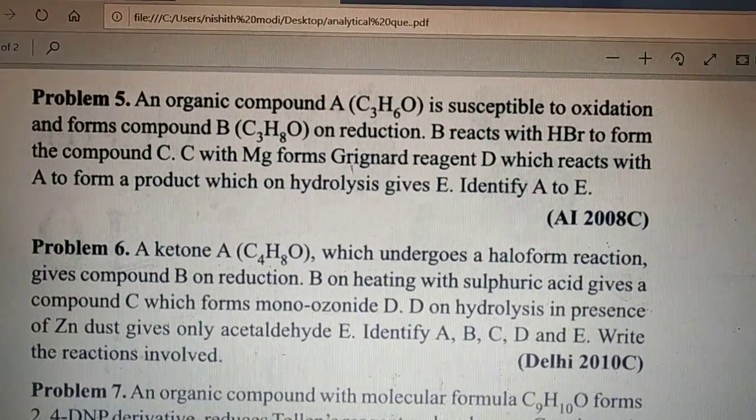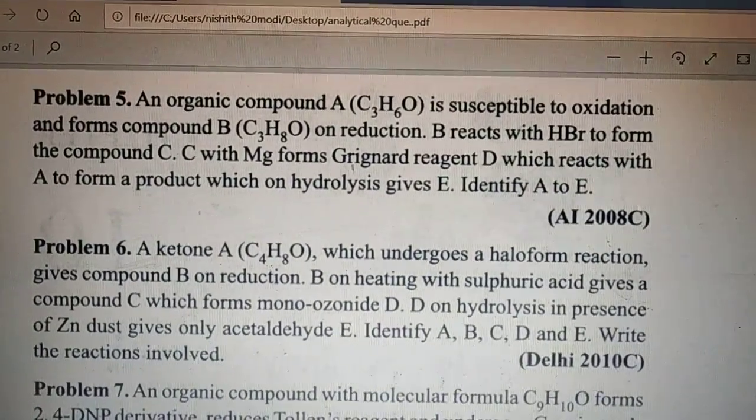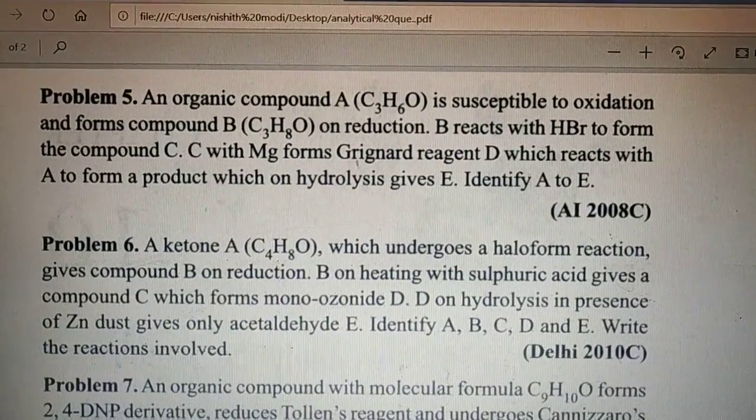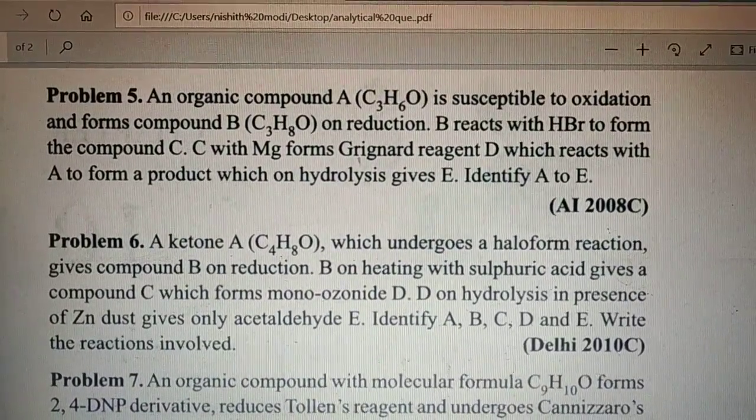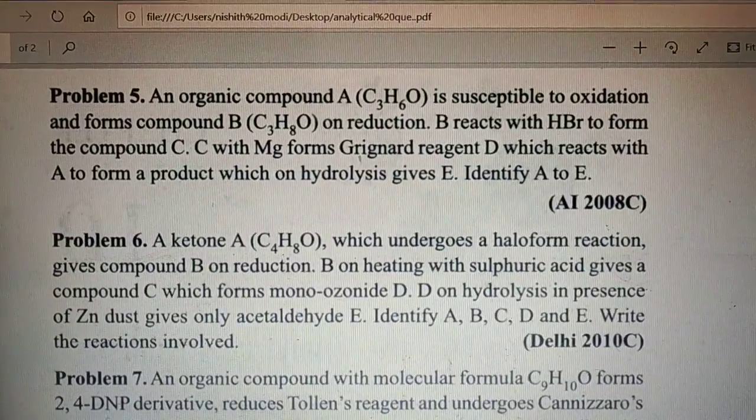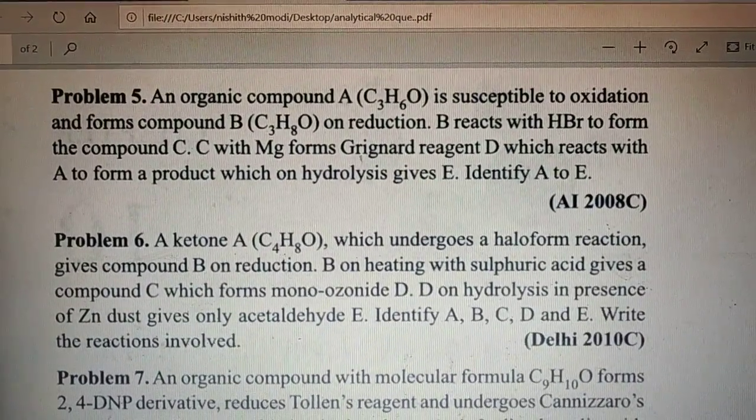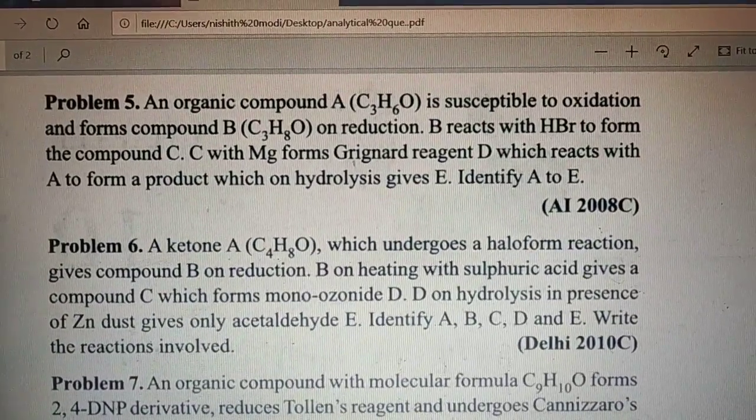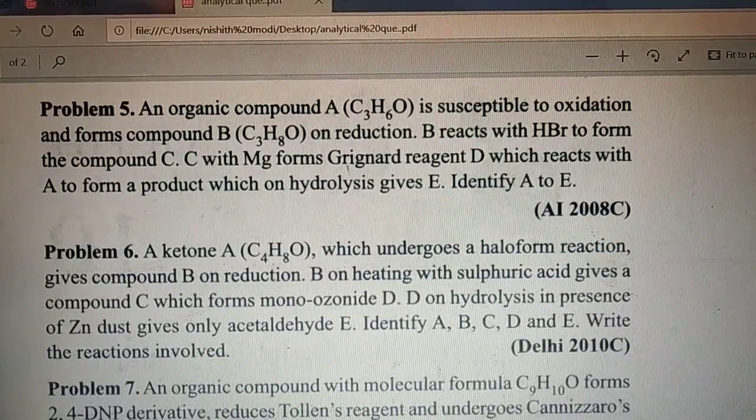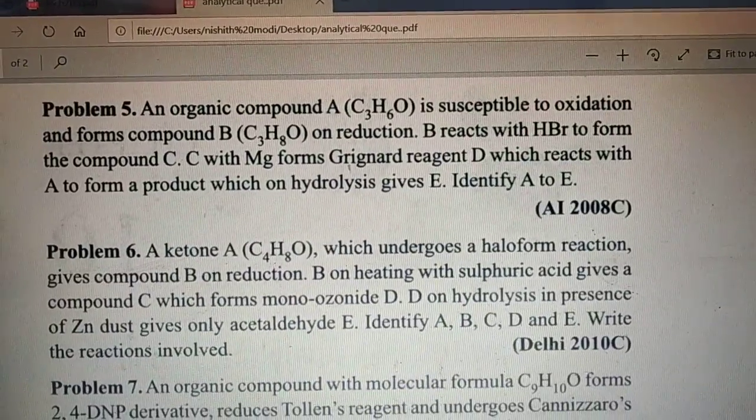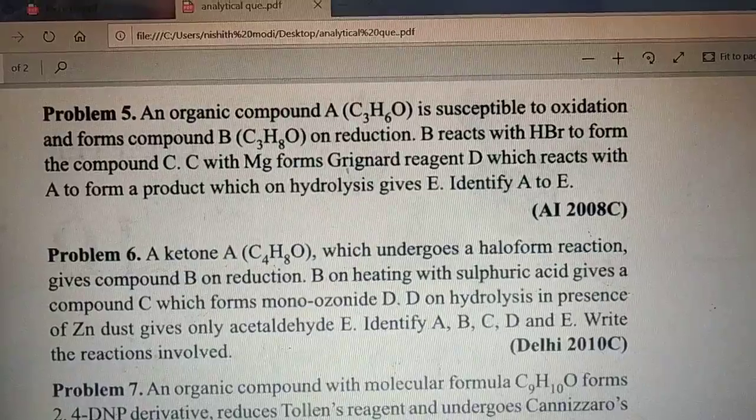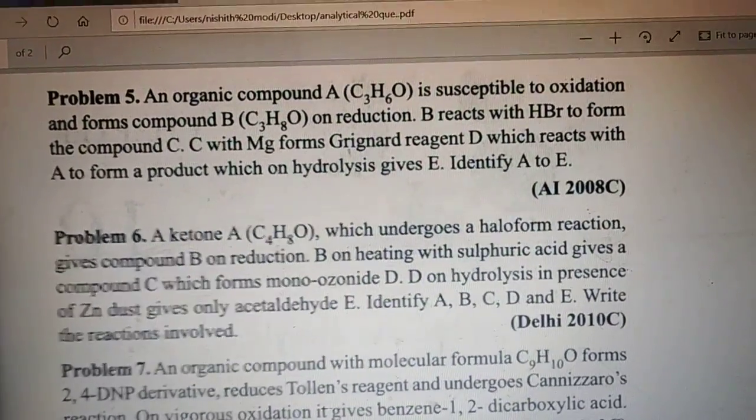Next numerical statement number 5. An organic compound A that is C3H6O is susceptible to oxidation and forms B that is C3H8O. A is oxidizing and after oxidation you get C3H8O that is B on reduction. B reacts with HBr to form compound C. C with Mg means Grignard reaction will give you the Grignard reagent with MgBr that is D, which reacts with A to form a product which on hydrolysis gives E. Read this statement twice and then we start.